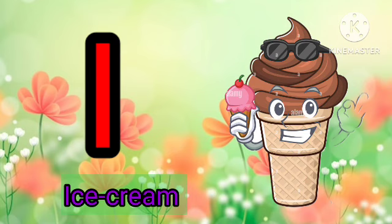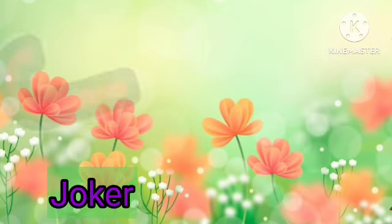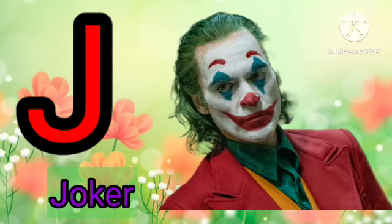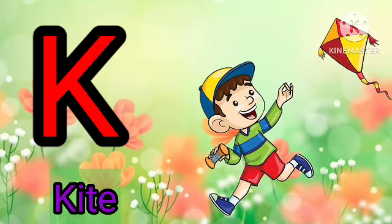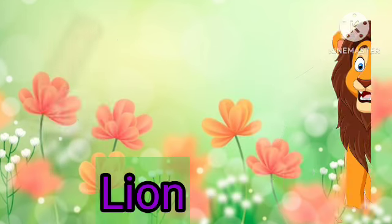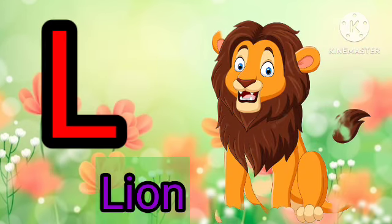I for ice cream, ice cream means ice cream. J for joker, joker means joker. K for kite, kite means patam. L for loin, loin means saith.